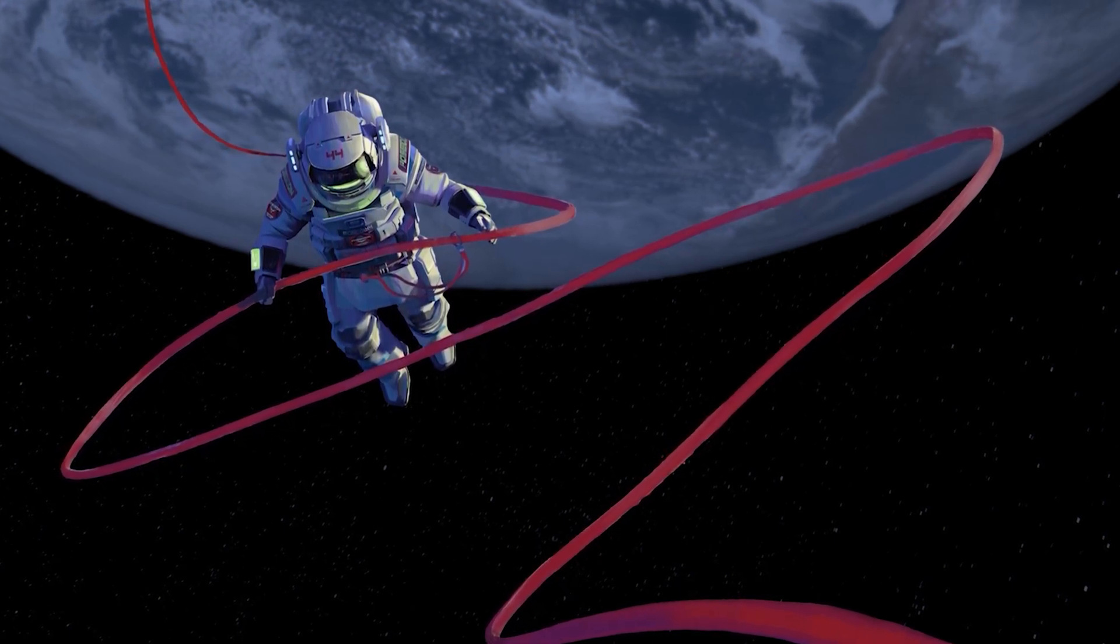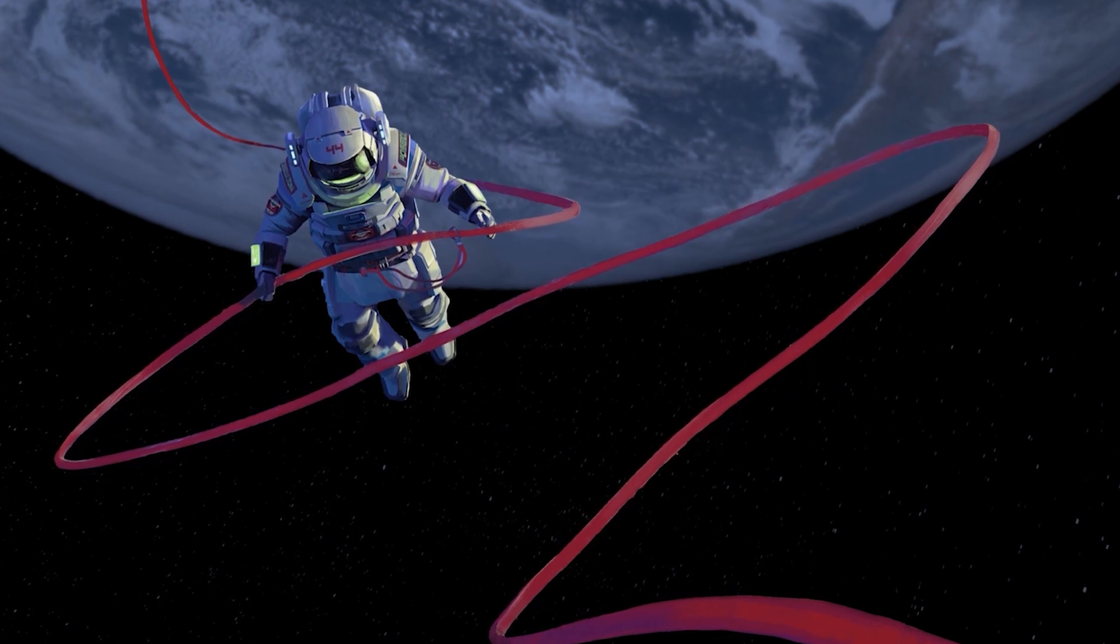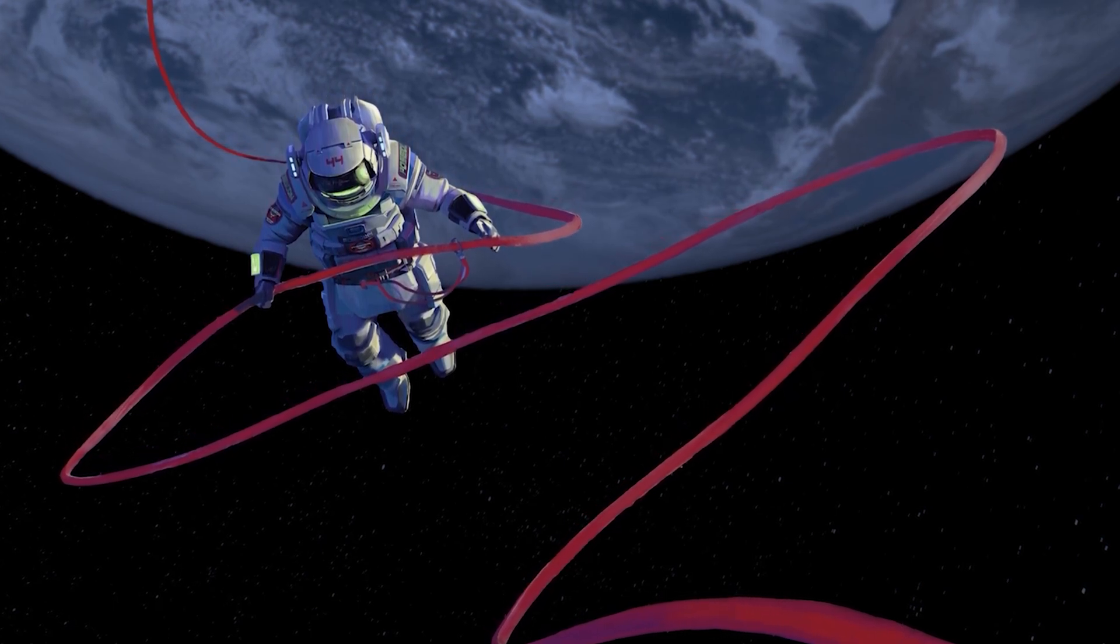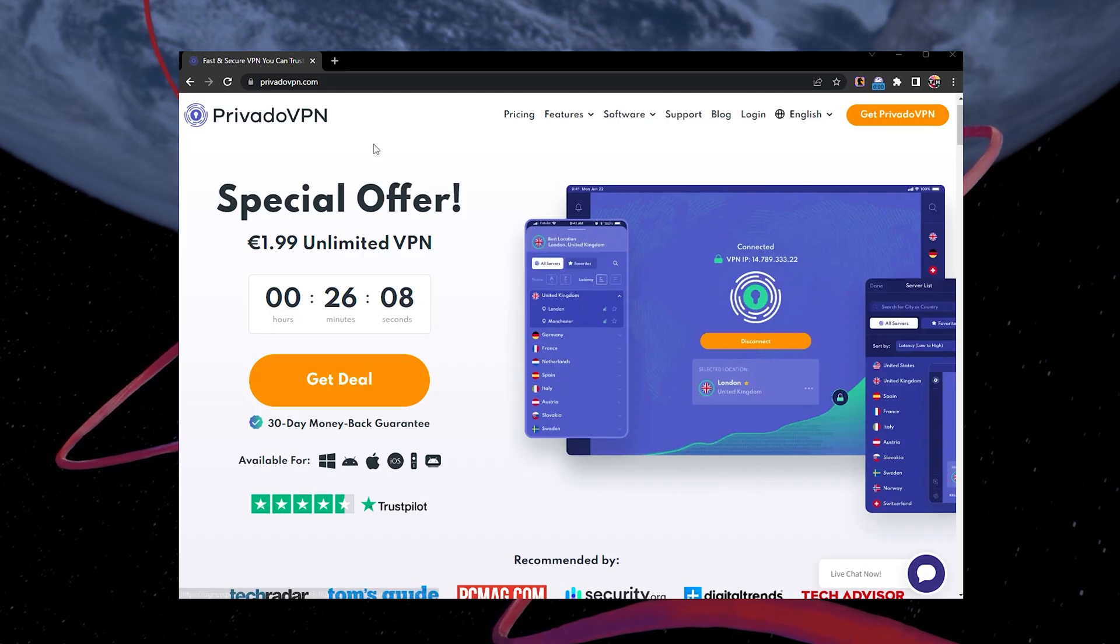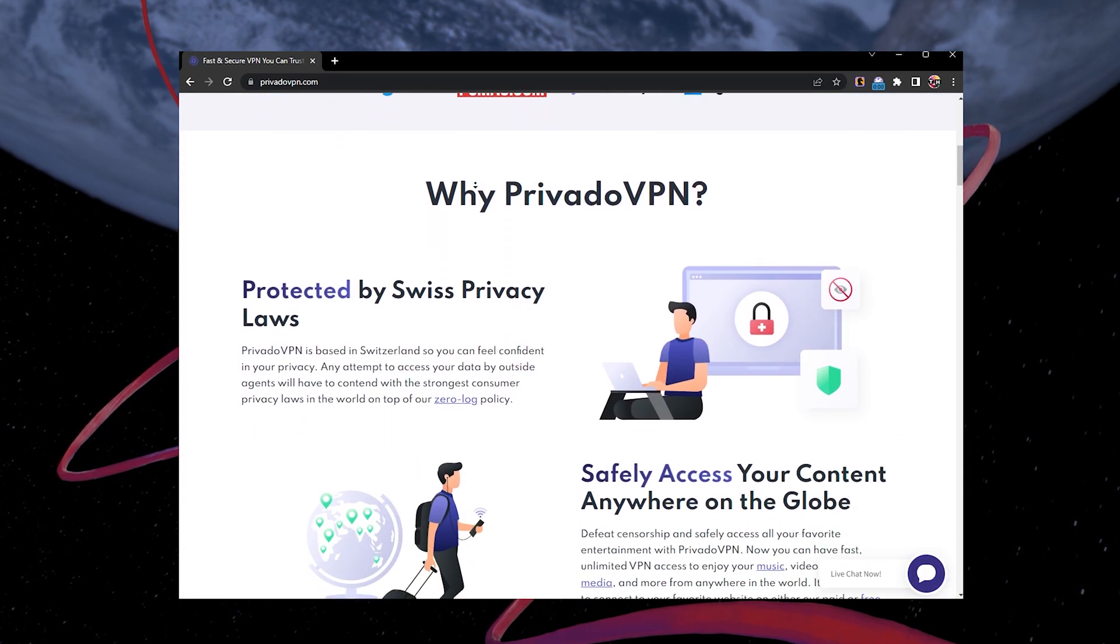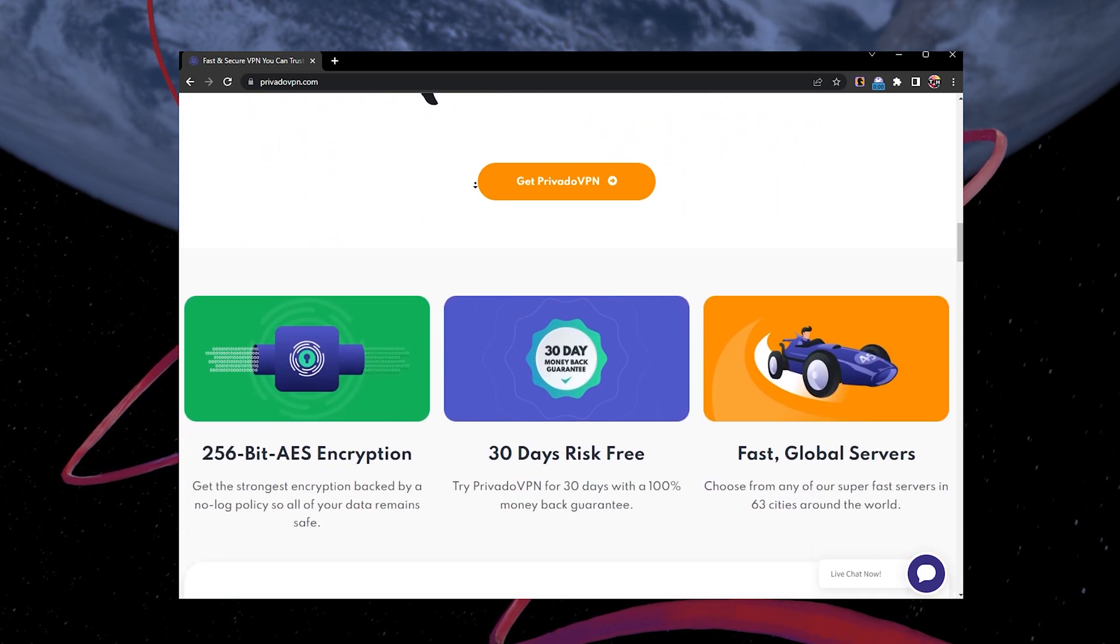Users may also experience network errors when they have internet problems. By using a VPN, you can bypass this access restriction. You can solve this issue by using PrivadoVPN. Find the link to PrivadoVPN in the video description.